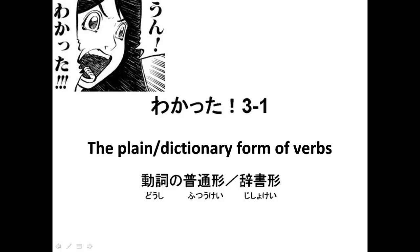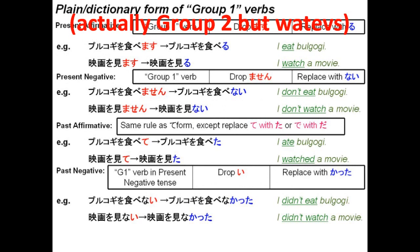Unit 3, 3-1: the plain form or dictionary form of verbs. I'm going to use what the coursebook refers to as group 1 and group 2 verbs, even though everyone else calls them the other way around.